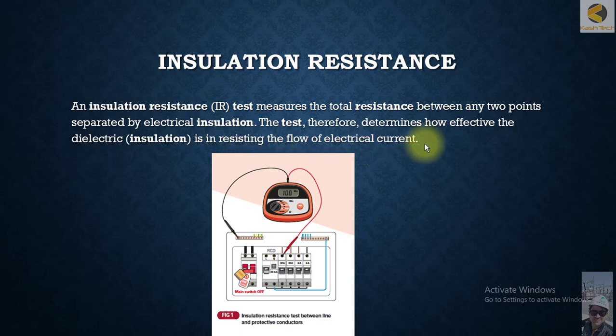Basically, when using a multimeter and measuring resistance, the value is typically one or two ohms. You can understand an IR tester, or megger, as a kind of multimeter whose range of resistance is very high — like megaohms or gigaohms. So the working principle is the same.